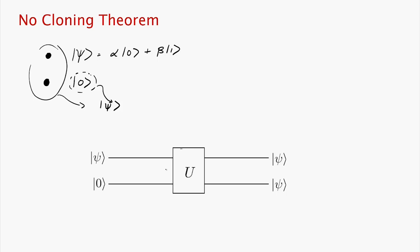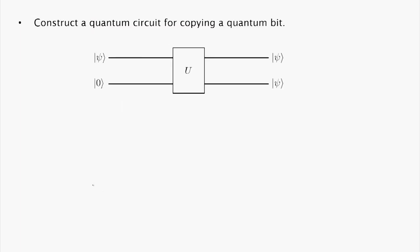The no cloning theorem tells us that there's no way of achieving this. So let's show that there's no such unitary transformation. The no cloning theorem is actually very simple. We want some unitary transformation that maps alpha zero plus beta one tensor zero to alpha zero plus beta one tensor alpha zero plus beta one, and we want to do this for all alpha beta, suitably normalized of course.